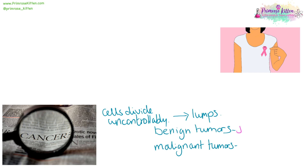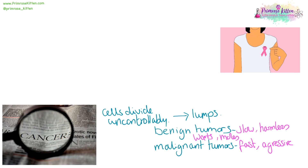Benign tumours are slow-growing and are generally harmless — things like warts or moles are benign tumours, and having a lump on your skin generally doesn't do you much damage. The problem is when they are malignant tumours. These are fast-growing, aggressive, and mobile. Cells from the initial lump are going to jump into the bloodstream, move somewhere else, and could set up tumours in other places. While a lump on your skin generally won't do you much damage, a lump in your brain, liver, or lungs can do quite a lot of damage.